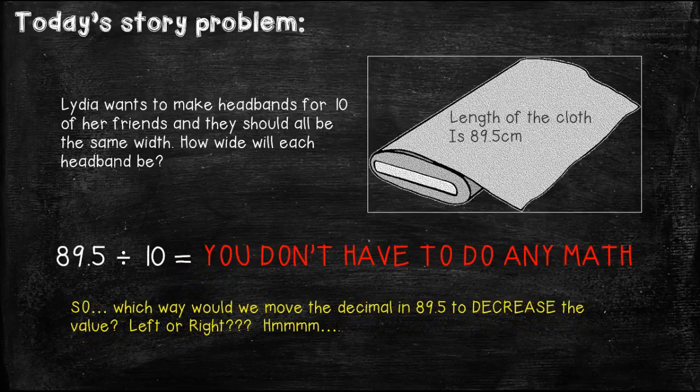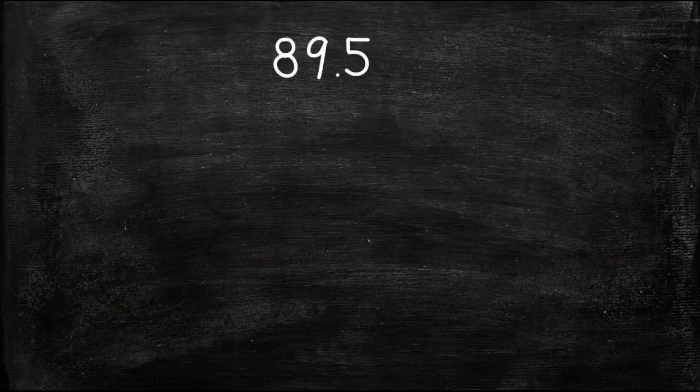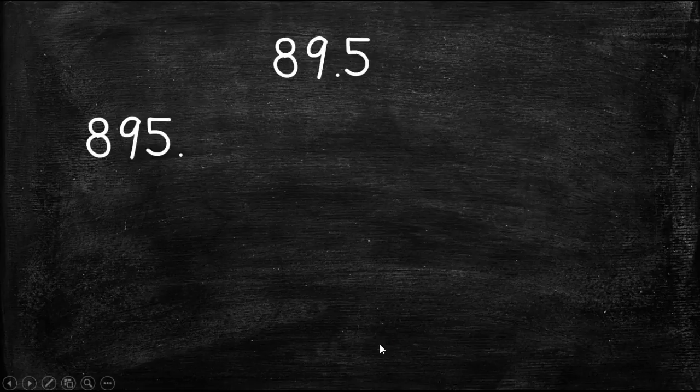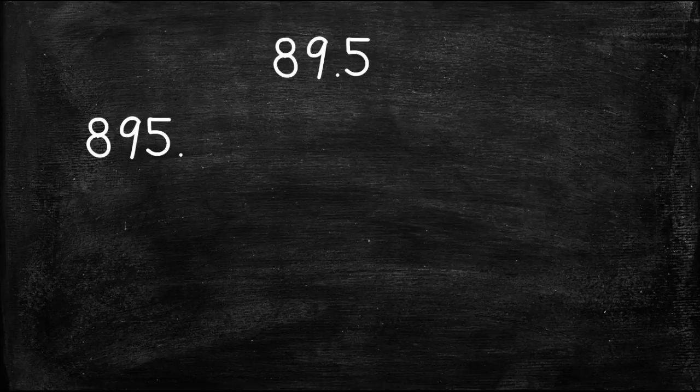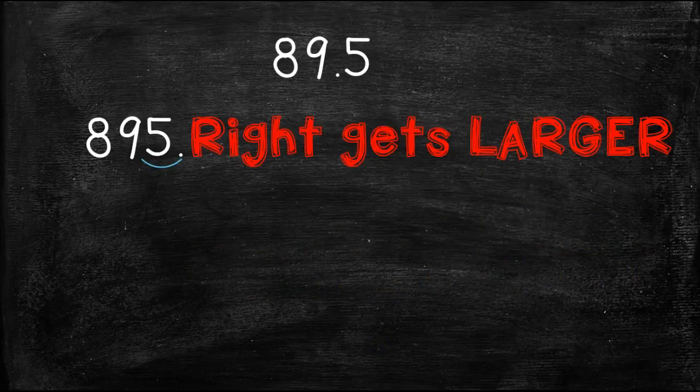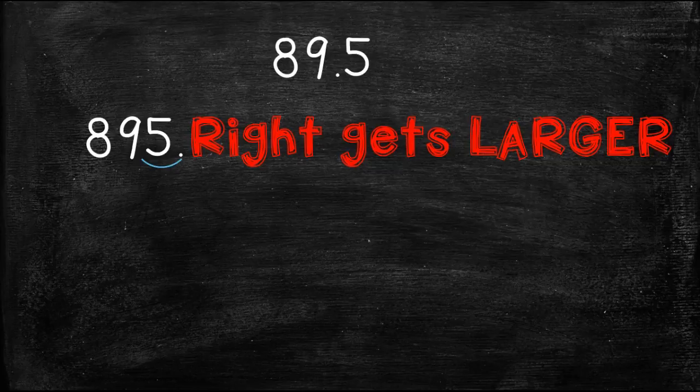So, which way would we move the decimal in 89 and 5 tenths to decrease the value? Would we move it to the left, or would we move it to the right? Hmm, what do you think? Well, let's find out. 89 and 5 tenths is the number we have. If we were to move the decimal to the right, that would give us 895. Is 895 larger than 89 and 5 tenths? Yes, so when we move the decimal to the right, it gets larger. But in this instance, we want to divide, or get smaller.